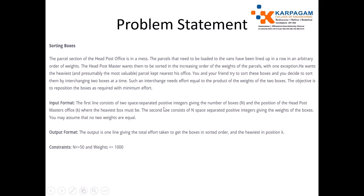You and your friend try to sort these boxes by interchanging two boxes at a time. The interchange needs effort equal to the product of the weights of the two boxes. The objective is to reposition the boxes as required with minimum effort. Input format: the first line gives two space-separated positive integers — the number of boxes N and the position K of the head postmaster's office. The heaviest box must end up at position K. The second line gives N space-separated positive integers for the weights.